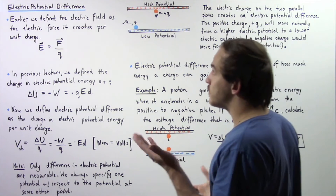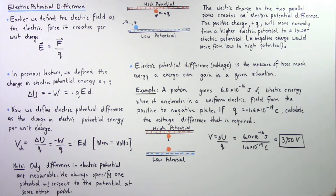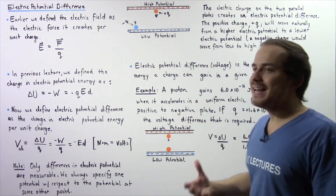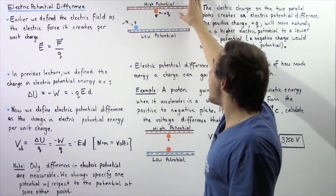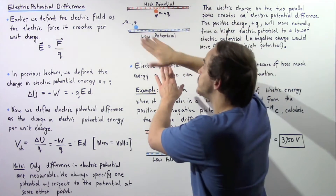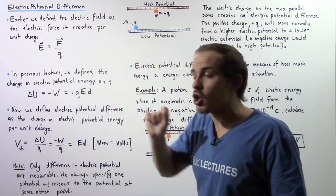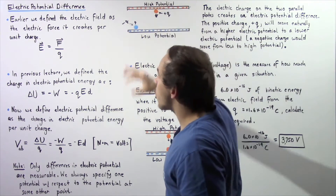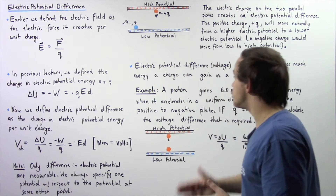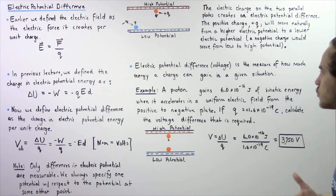Another useful way of defining electric potential difference is as the measure of how much energy a charge can gain in a certain situation. When a positive charge travels from the high potential to the low potential — across this voltage difference — it gains kinetic energy. Similarly, when a negative charge moves from the low potential to the high potential because a voltage difference exists, it also gains kinetic energy. So electric potential difference, or voltage difference, is the measure of how much energy a certain electric charge can gain in a given electric field.